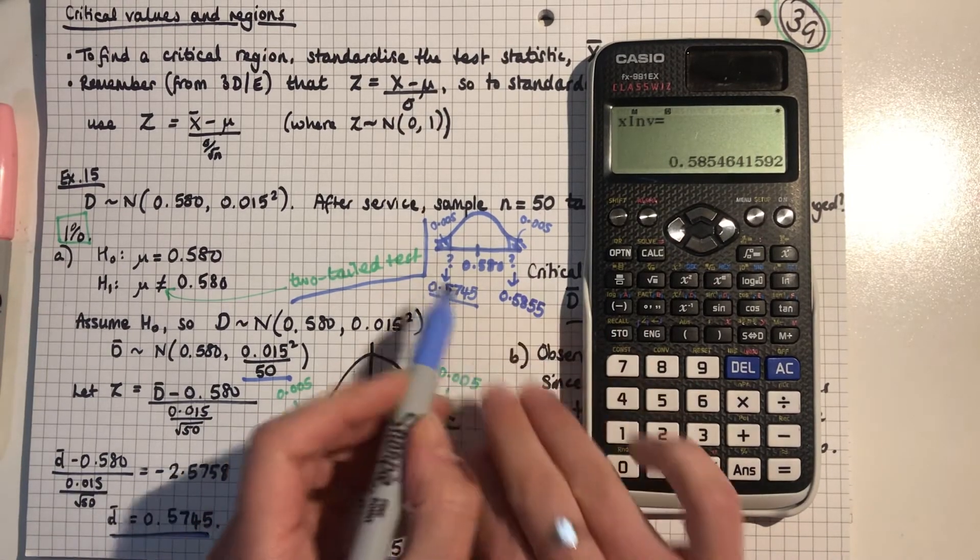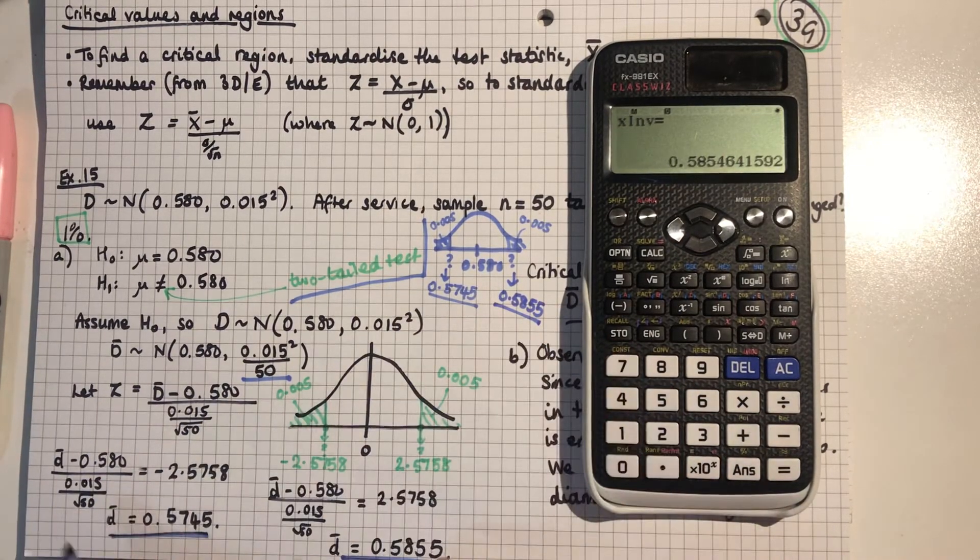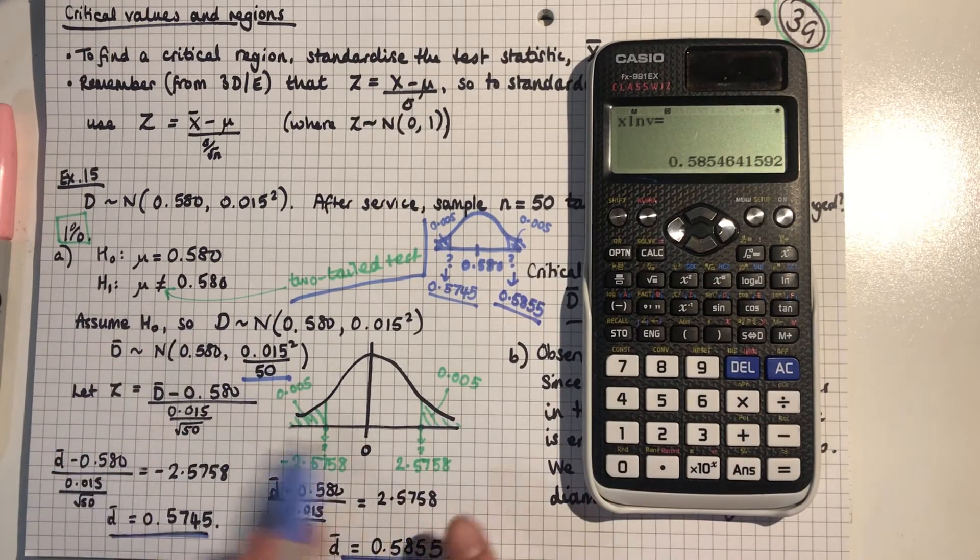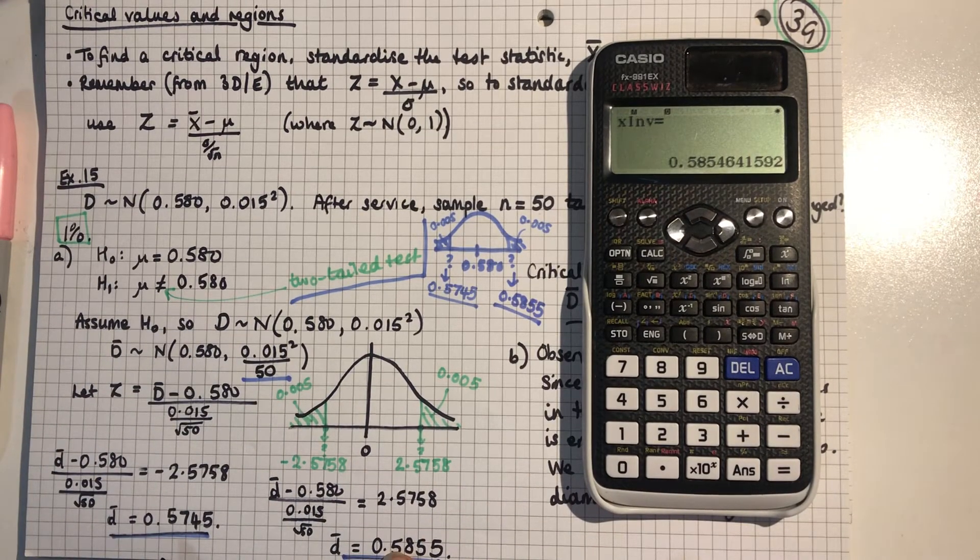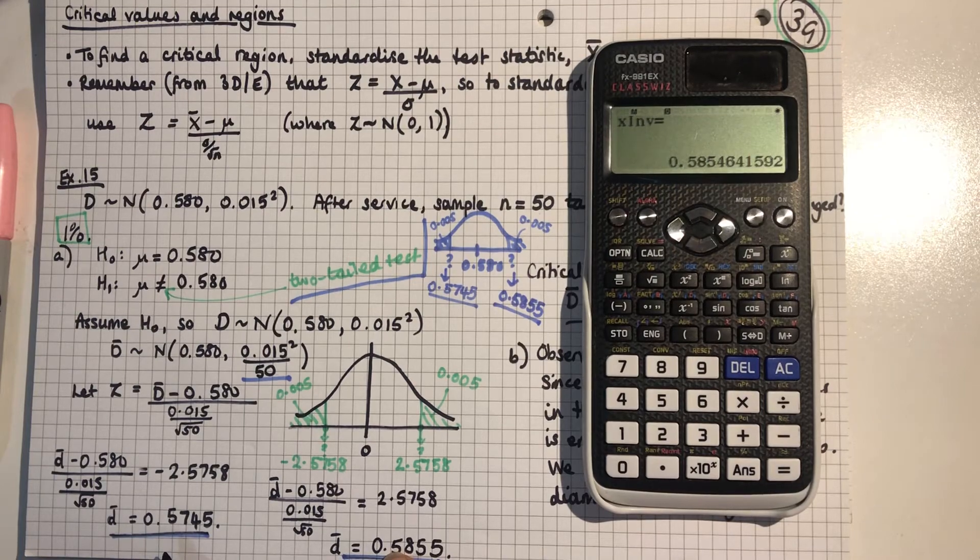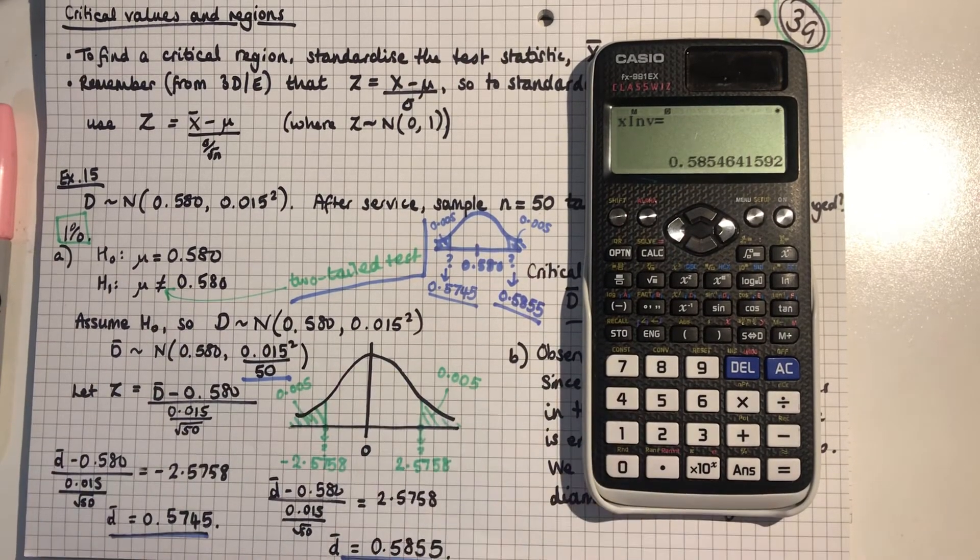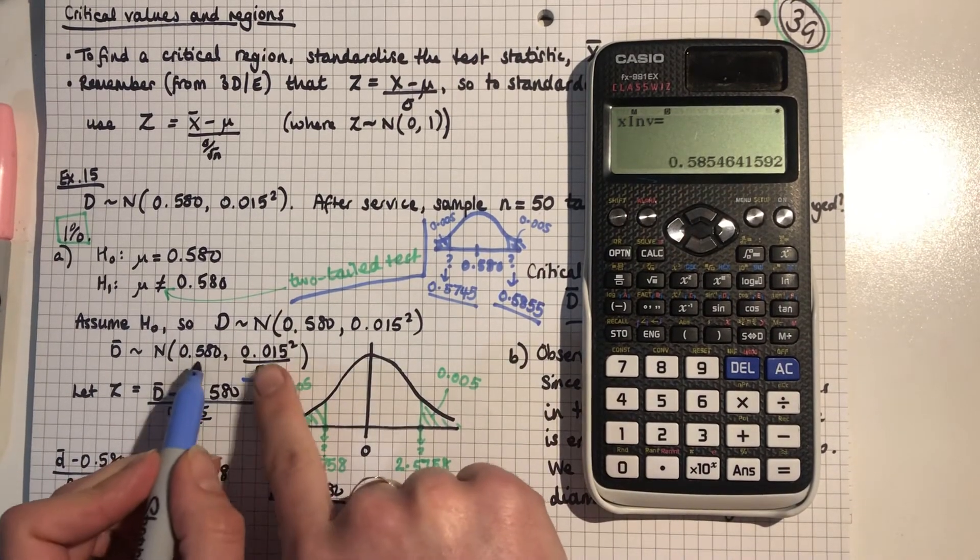Now, obviously, that is a lot more straightforward than doing the whole standardization process to find these. But you have to know how to do the standardization process because you have to use this process when you have unknowns for mu or sigma.